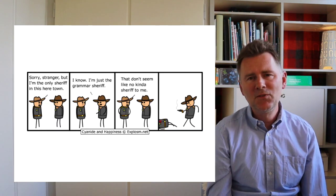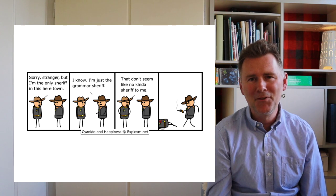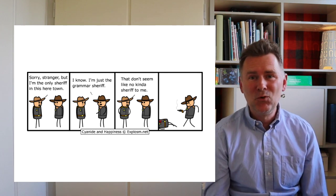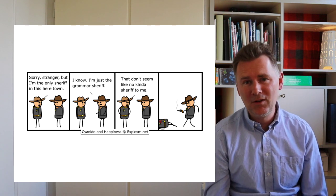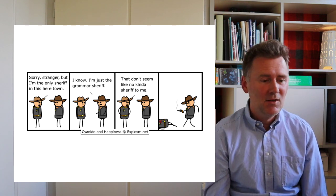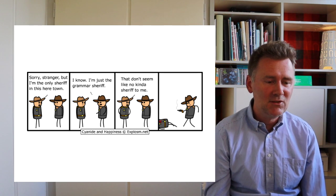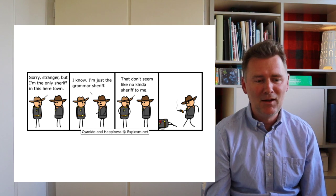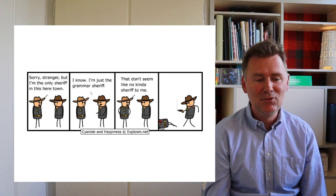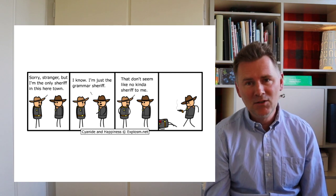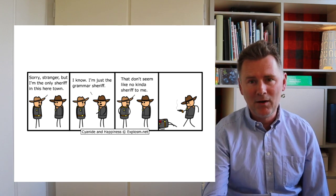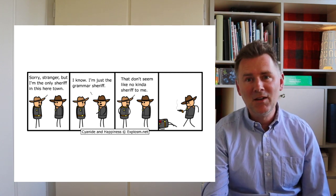Negative concord is famous for the fact that you're not supposed to do it. There are many prescriptivists — grammar sheriffs — who will call you out if you use negative concord. I brought a little example: a sheriff says 'I'm the only sheriff in this here town,' and the grammar sheriff replies 'I know, I'm just the grammar sheriff.' The real sheriff replies 'that don't seem like no kind of sheriff to me,' upon which the grammar sheriff does what needs to be done. Just to make you aware — negative concord can be dangerous stuff.